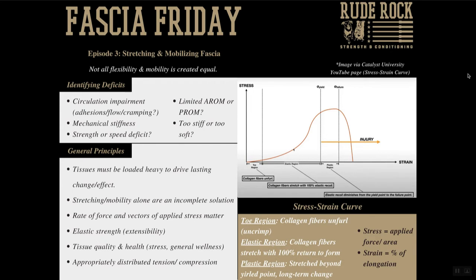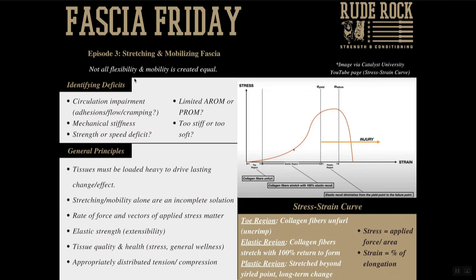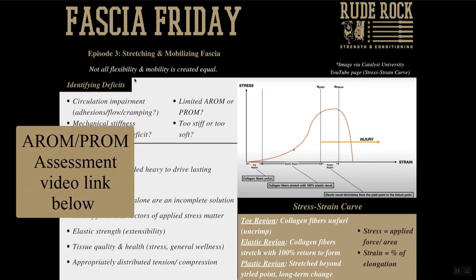So with that, we want to start by identifying where the deficits are. Looking here to the right, these are two of the fundamental questions that determine a lot of programming and exercise selection for me. The number one indicator is: are they limited in active range of motion or passive range of motion? With active range of motion, the athlete achieves the range on their own without assistance, whereas passive range of motion is somebody taking them through it. An active ROM deficit infers more of a motor control, strength, or stability deficit, whereas passive ROM suggests more of a tissue extensibility or mobility issue.